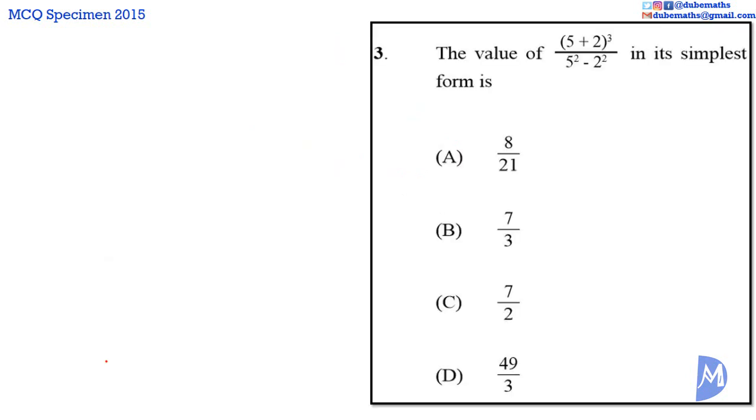Question 3: 5 added to 2 cubed, all over 5 squared subtract 2 squared. In the numerator with BODMAS, we work out the brackets before the power. So simplifying, we have 5 plus 2 equals 7, 7 cubed.